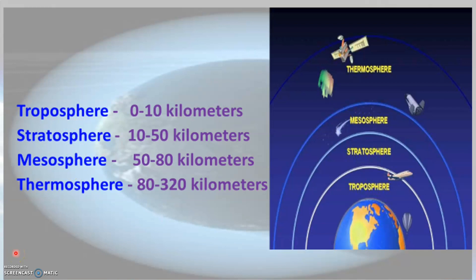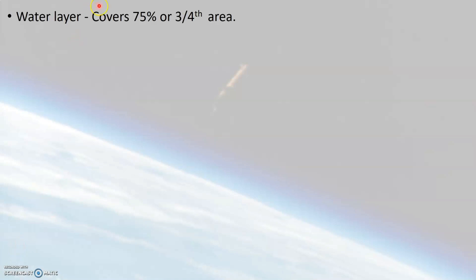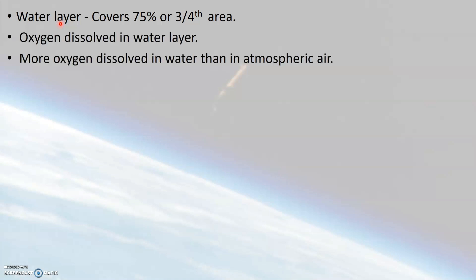Air is essential for the survival of life on earth, and water is equally important. About three-fourths, or around 75%, of the earth's surface is covered by water. This water layer on the surface of the earth contains dissolved air, which contains oxygen gas. Oxygen gas is more dissolved in water compared to the oxygen present in atmospheric air, whereas nitrogen gas is not much soluble in water compared to oxygen.